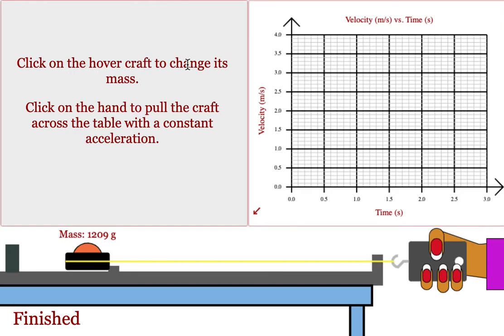Click on the hovercraft to change the mass. Click on the hand to start it moving across the table. Again, it will move with a constant acceleration. You're going to be applying a constant force.